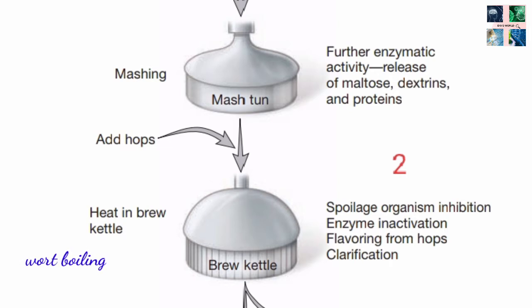The fifth step is wort boiling. In the brewing pan or wort kettle, the wort is boiled and hops are added. The taste of the beer depends on the type and amount of hops used — the more hops, the more bitter the beer. As water evaporates, the wort is concentrated to the original wort. The malt enzymes are deactivated and tannin and protein elements are separated out to form the so-called trub.